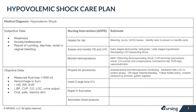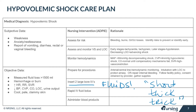With hypovolemic shock, replacing fluids is super critical. First, insert two large bore IVs — remember, short and thick does the trick. Short and thick catheters provide for faster fluid administration, which is done with a pressure bag and rapid infuser. An infusion pump is only capable of infusing one liter an hour, so fluid should be given as soon as possible and as fast as possible to restore circulating blood volume.